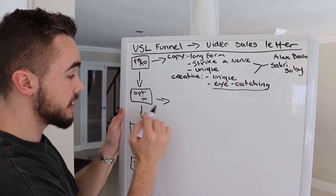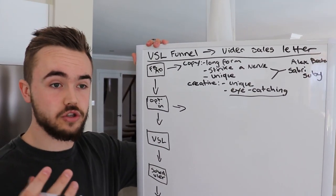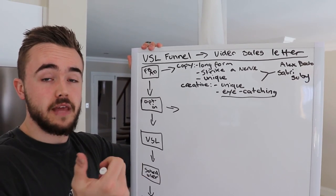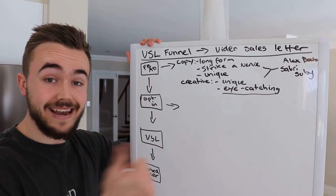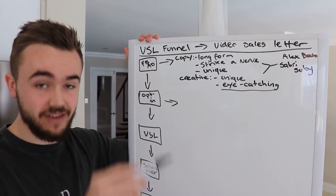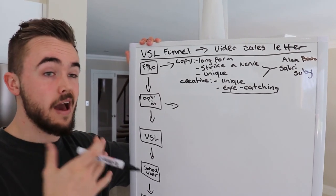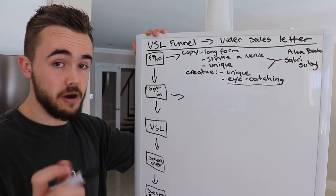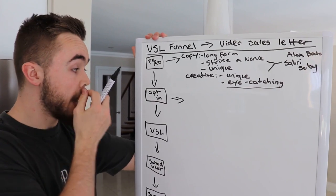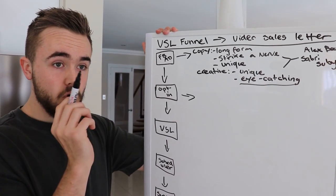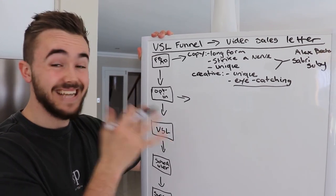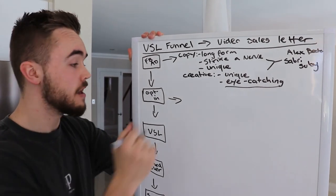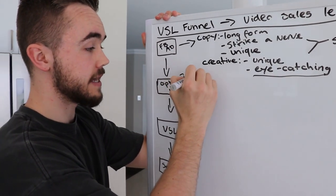Next, we have the opt-in page. The goal is to get people to opt-in, and when they do, they give you their name and email address. Once they opt-in, you should have it integrated with email marketing software — I personally use ActiveCampaign — so you can then do email marketing. The opt-in page conversion rate — the percentage of people who visit and actually opt-in — should be 20% or above. That's the range you should be shooting for.